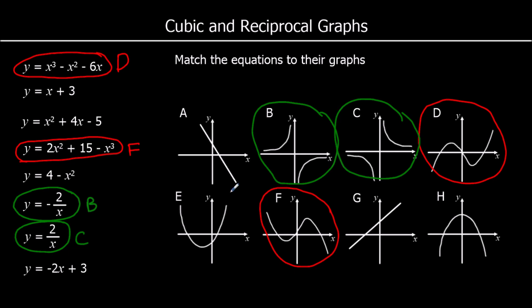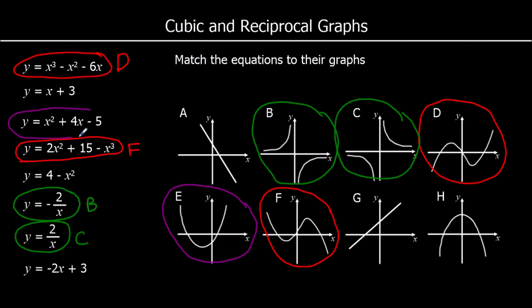Our quadratic graphs are parabolas — either a U shape or an N shape. The positive quadratic opens upward, the happy face shape, and the negative opens downward. Our positive one is x squared plus 4x minus 5, and our negative one is 4 minus x squared, which is H.